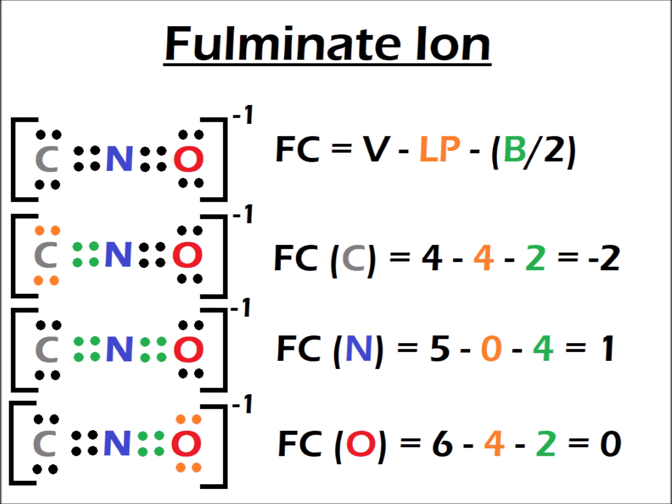Finally, we look at the formal charge on oxygen in the fulminate ion. It has six valence electrons, four lone pair electrons shown in orange, and four bonding electrons — divided by two gives two — so the formal charge on oxygen is zero. The most electronegative element has zero formal charge, which is okay, but the non-electronegative carbon is minus two and the electronegative nitrogen is plus one. These are all signs pointing to very high instability, which we know is true of fulminate ion and not of isocyanate ion.